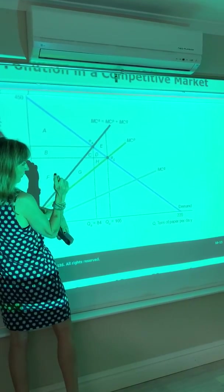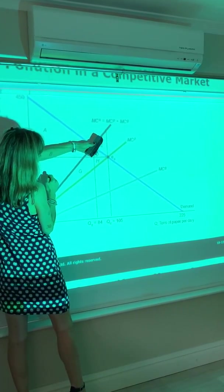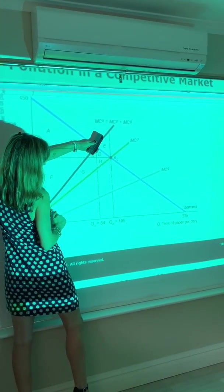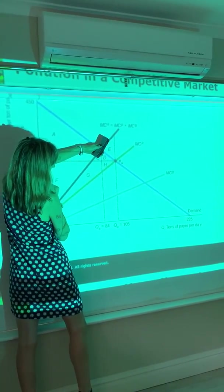What is your producer, private producer surplus going to be? It's going to be the area below your price line and above your private marginal cost curve: Areas F, G, and H.